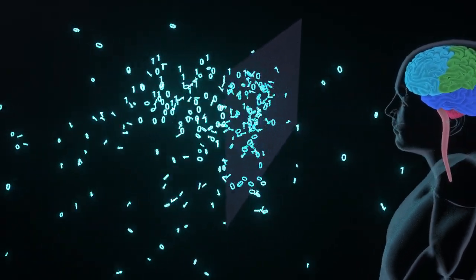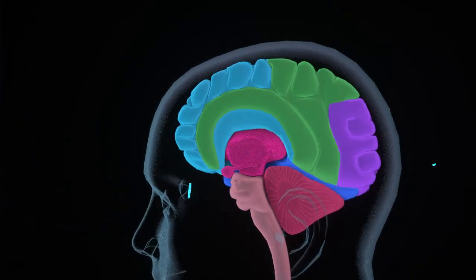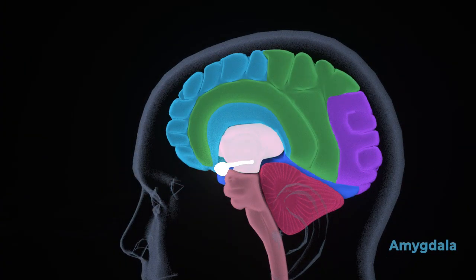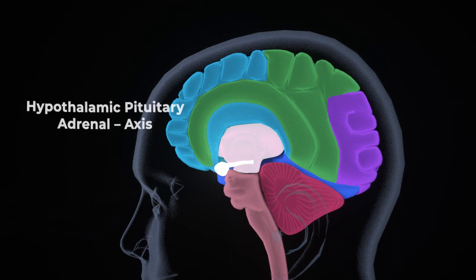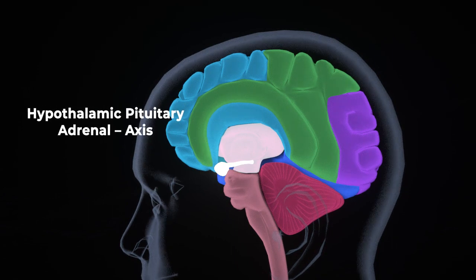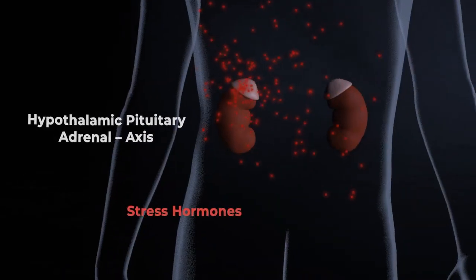This extracorporeal data causes BA19 to raise the alarm, alerting the amygdala, almost simultaneously triggering the hypothalamic-pituitary-adrenal axis, increasing the level of stress hormones into the system.